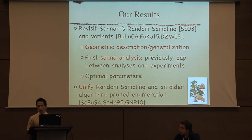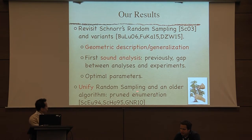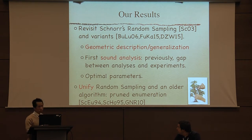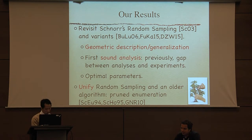This is actually the first sound analysis. There's been a lot of analysis before, but there used to be a gap between analysis and experiments. Because of this description, we're also able to optimize the selection of parameters. Roughly what we're doing is unifying Schnorr's random sampling with Schnorr's pruned enumeration algorithm, which is very classical and used in many records.